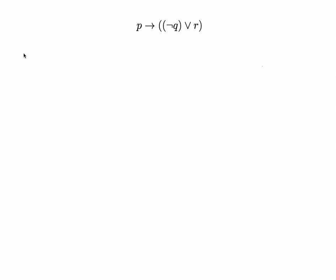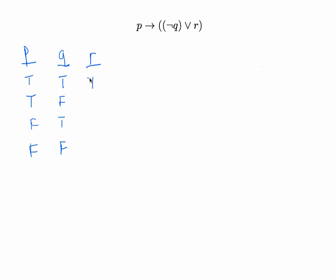First thing we need to do is make three columns — one for P, one for Q, and one for R. We're going to list all possible truth combinations of these three variables. There are eight of those, and we'll go with true, true, true; true, false; false, true; false, false — and set R equal to true to get our first four rows.